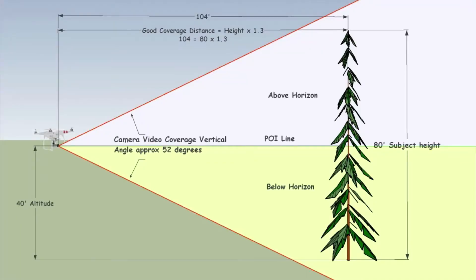When using a point of interest, the center of the field of view is what points to the POI. When the POI and aircraft are at an altitude of about one half the height of the subject, you need the aircraft at a distance of about 1.3 times the height of the subject to get the entire subject close to filling the height of the frame. Here we have a tree about 80 feet tall, so we need about 1.3 times 80, giving a distance to the tree of about 104 feet. This distance will make the tree large in the frame.